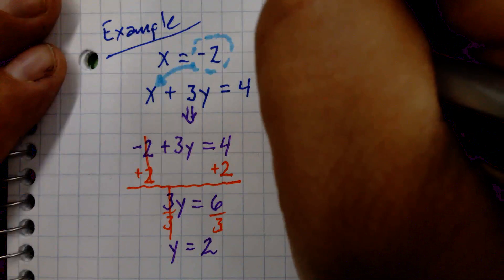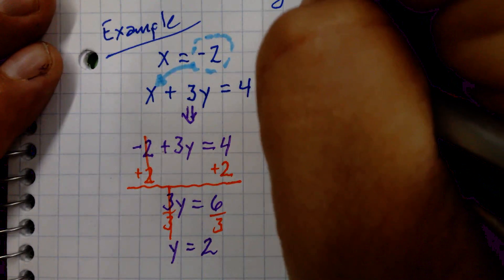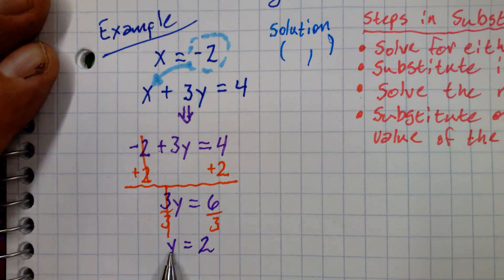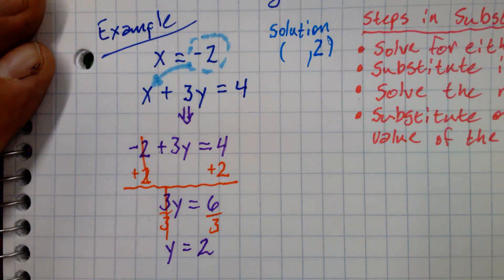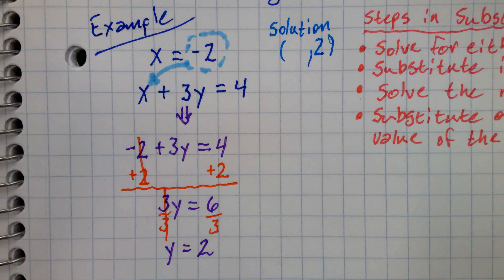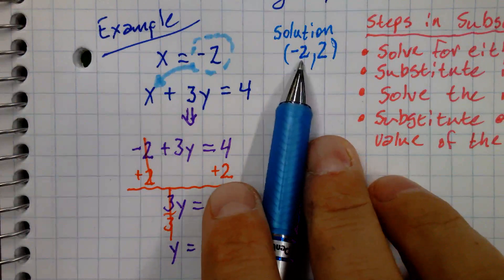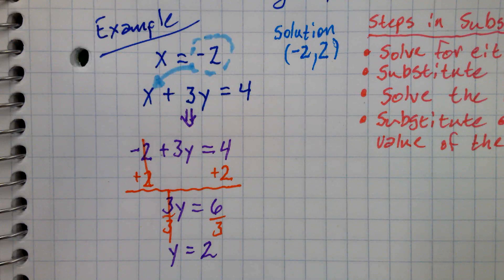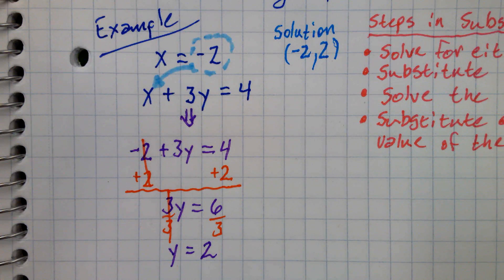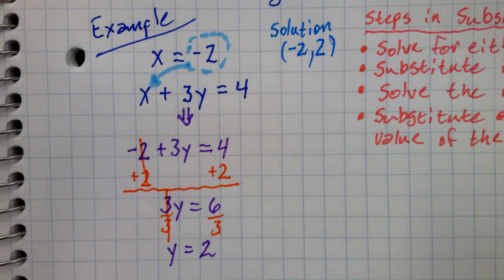Now it's a one-step equation: 3y equals 6. Divide by 3 and we get y equals 2. That's part of our solution. The y portion is positive 2. And we already know what x equals — negative 2. So these two lines cross at negative 2, 2.